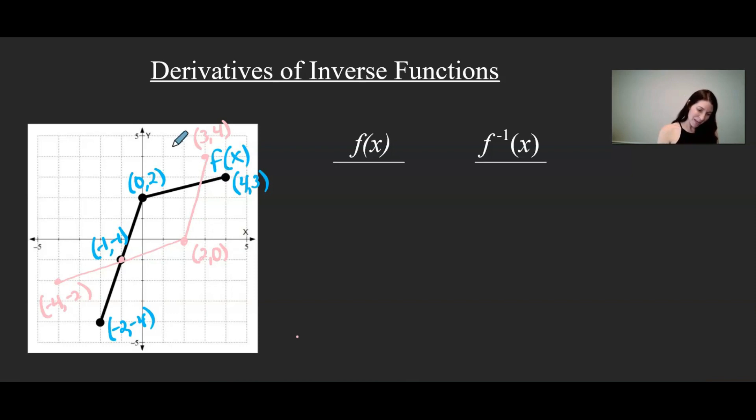There we go. And this one in pink is f inverse of x. So you can see the original function f(x) and the graph of its inverse. And a little fun fact also about a function and its inverse function. Those two lines are reflections of each other over this line, y equals x. And if I draw this in, you can see that reflection just a little bit easier. Another little fun fact about inverse functions.